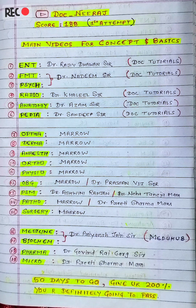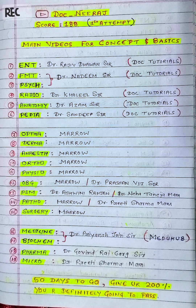For the next subjects — Ophtha, Derma, Anesthesia, Ortho, and Physio — I did from Mero. For OBG, I did from Sakshi Rora ma'am, and you can also do from Dr. Pasan Vesh sir, he is also very good. For PSM, I did from Dr. Ashwini Ranjan sir, and you can also do from Dr. Neha Taneja ma'am — she is also very good.